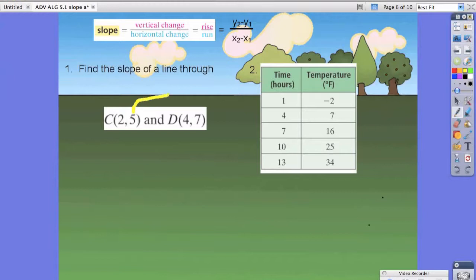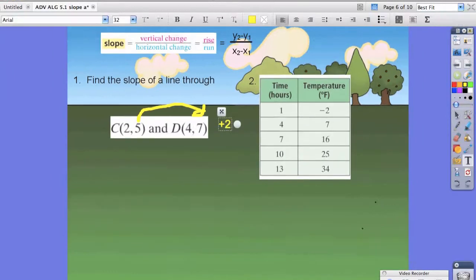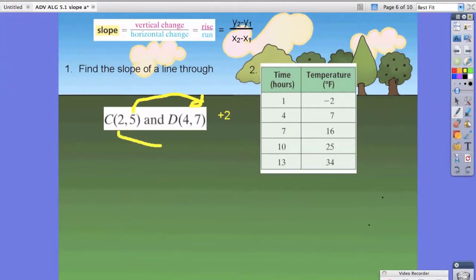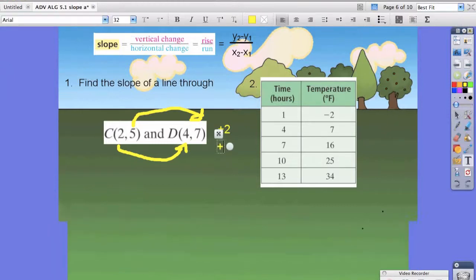So from 5 to 7, notice our y's we did on the numerator. From 5 to 7, we had to add 2. And from 2 to 4, we also had to add 2.